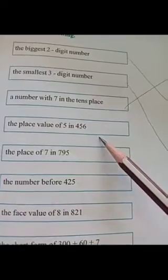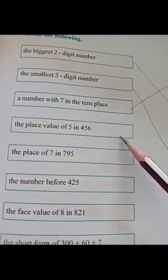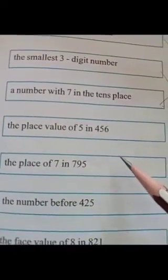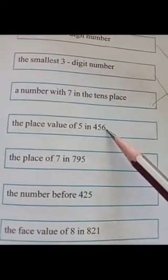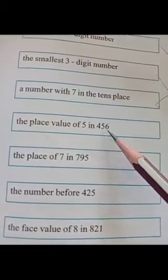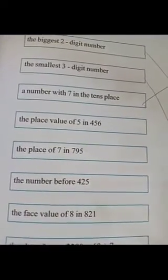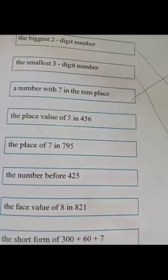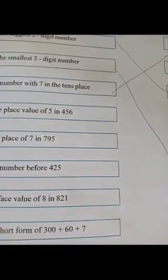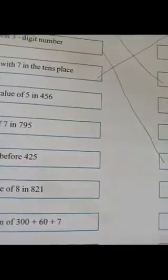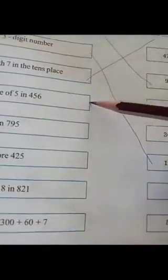Next one — the place value of five in four hundred and fifty-six. The place value of five in four hundred and fifty-six. Five is in the tens place. Five tens means how much? Fifty. So the place value of five is fifty.